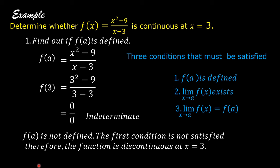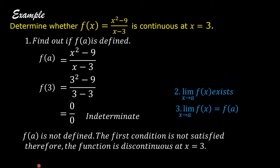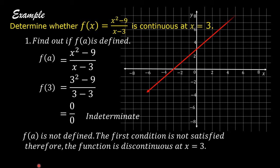Therefore, the function is discontinuous at x = 3. This is the graph of the function. There is a hole at x = 3 because it is discontinuous at x = 3.